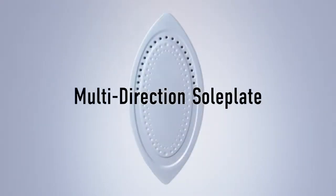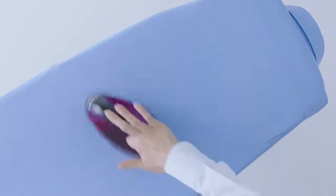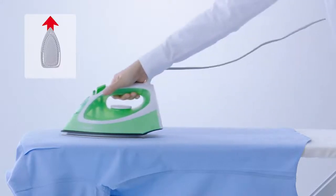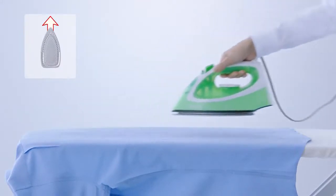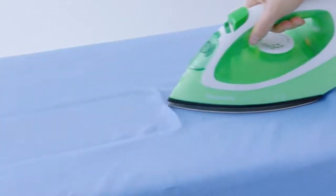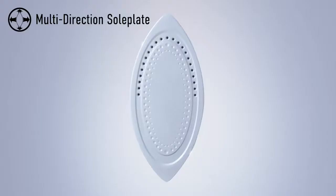Panasonic's multi-direction sole plate makes ironing faster and more efficient. Conventional irons can move only forwards because they will leave creases as you move them back over the fabric. Our iron is tapered at both ends.